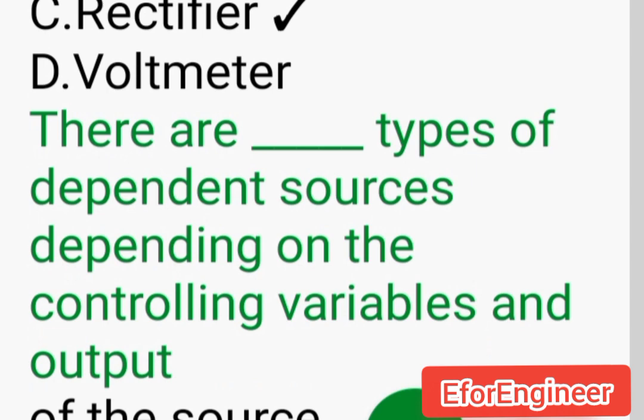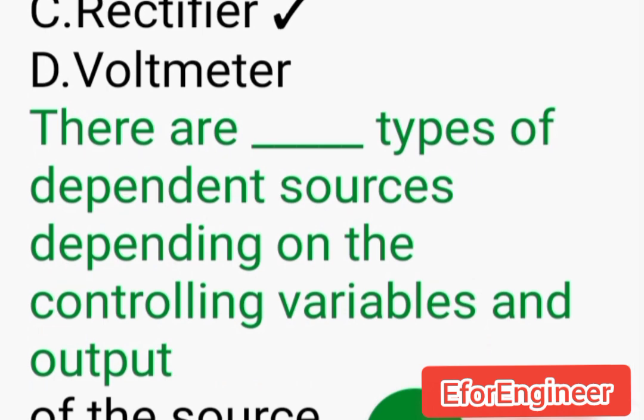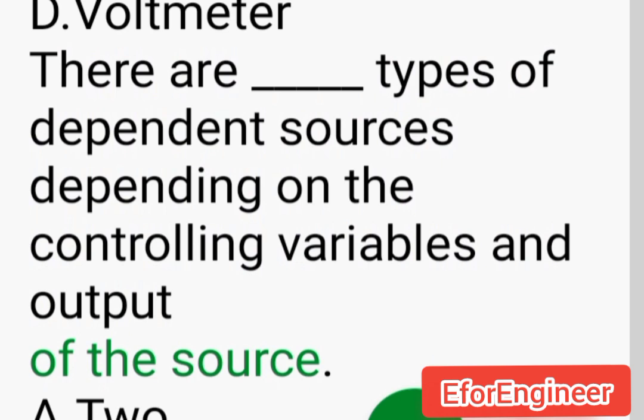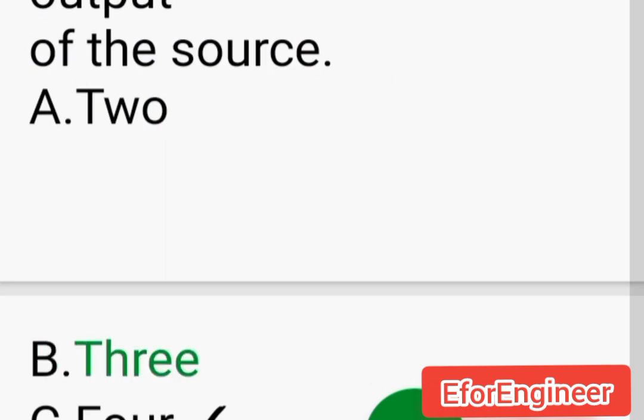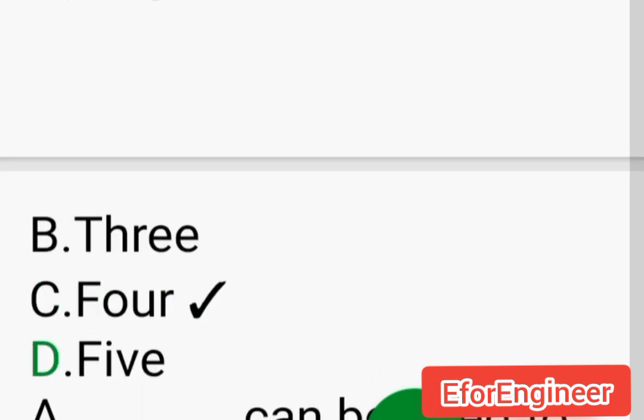There are ___ types of dependent sources depending on the controlling variables and output of the source: A. 2, B. 3, C. 4, D. 5.